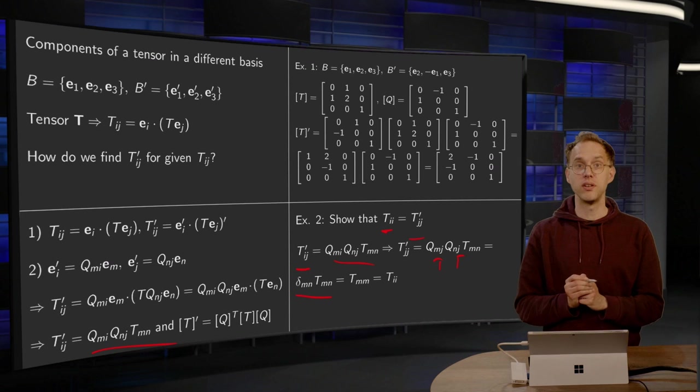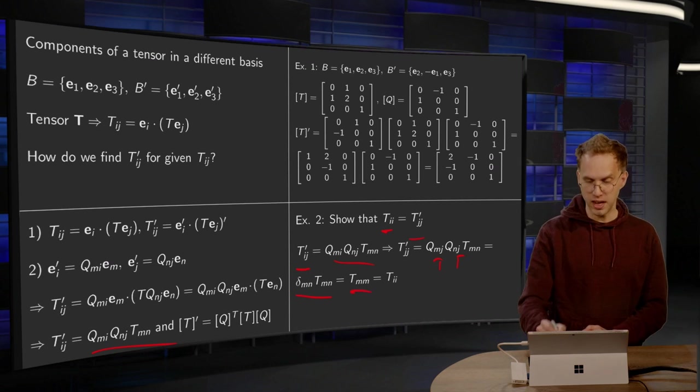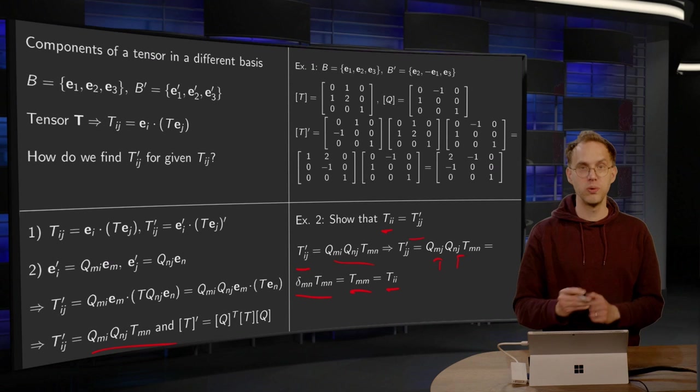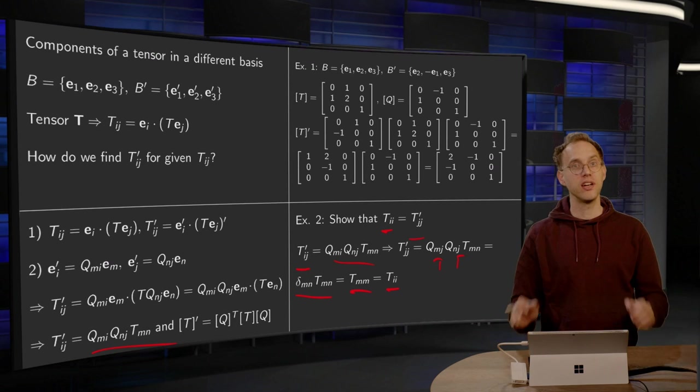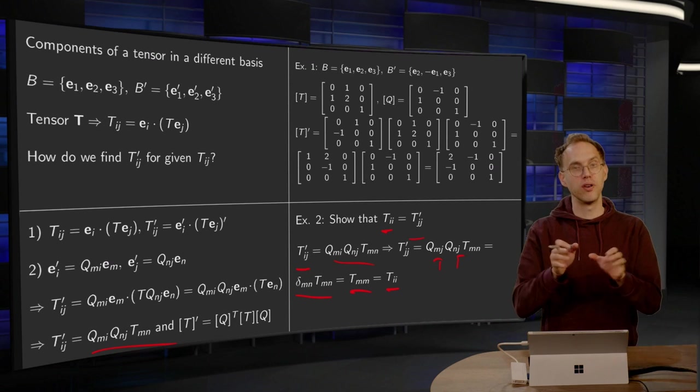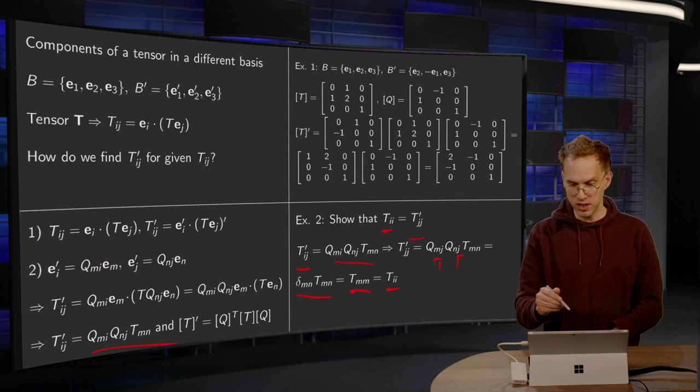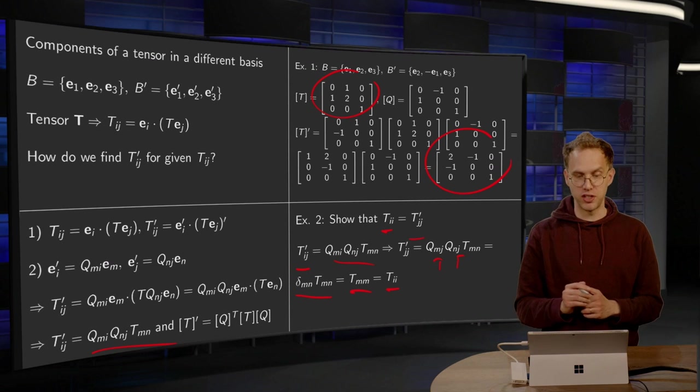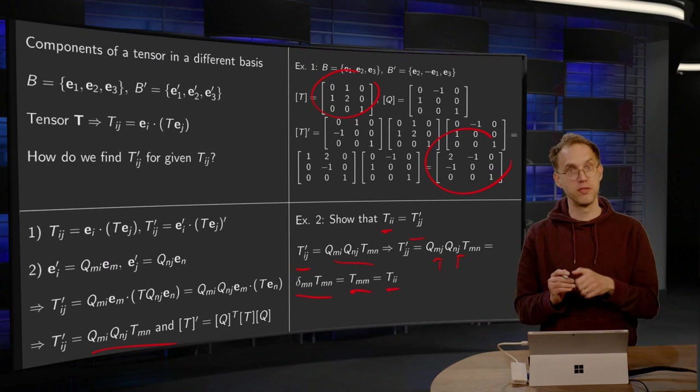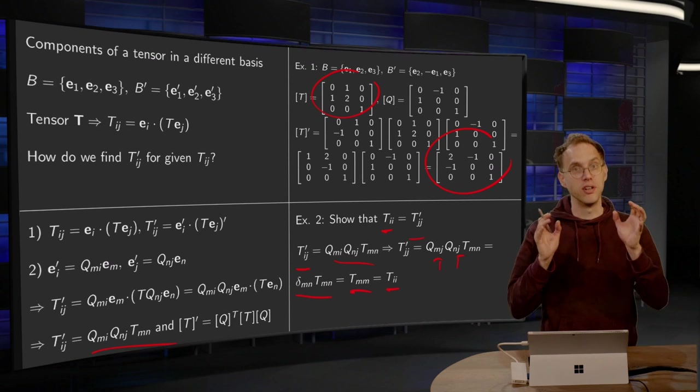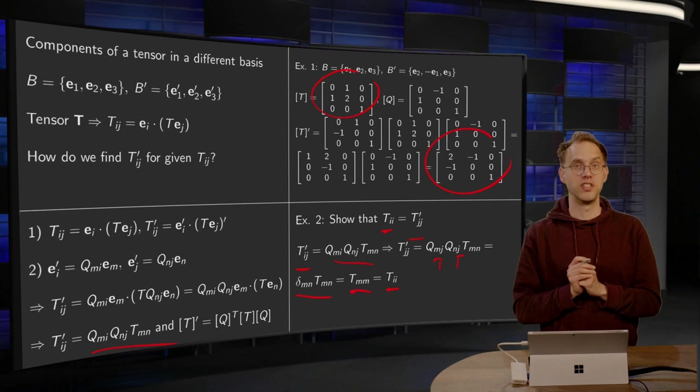So this equals, if you perform the sum over n, T_mn. And then you can use another name for the summation index, so it's equal to T_ii. So here you see that if you transform your tensor, the numbers are different. You can see that. Here we have these numbers, here we have other numbers. However, the traces in the first base is 0 plus 2 plus 1 equals 3, and in the other base is 0 plus 1 plus 2, also equal to 3. So the traces are always the same.